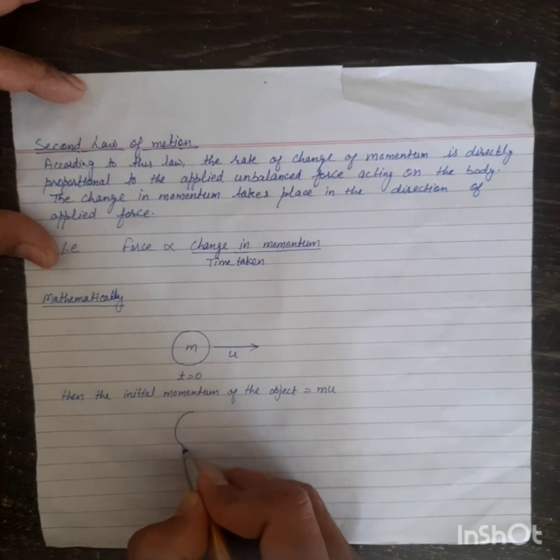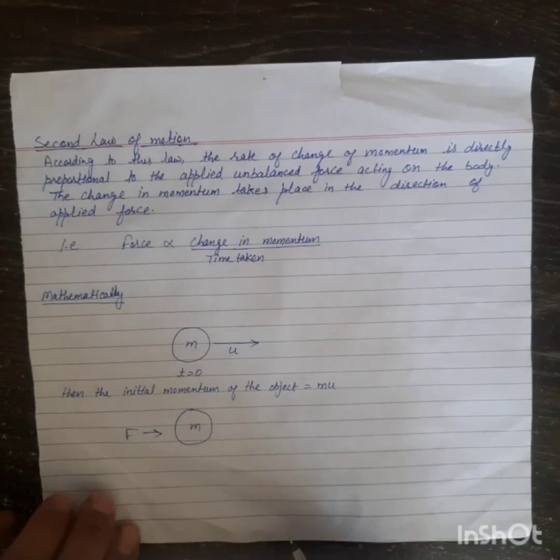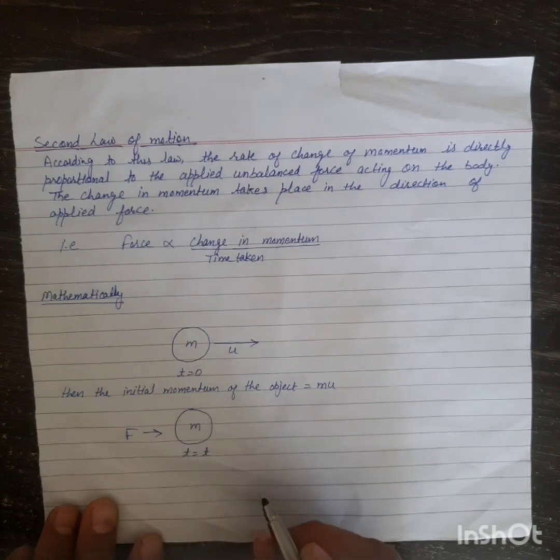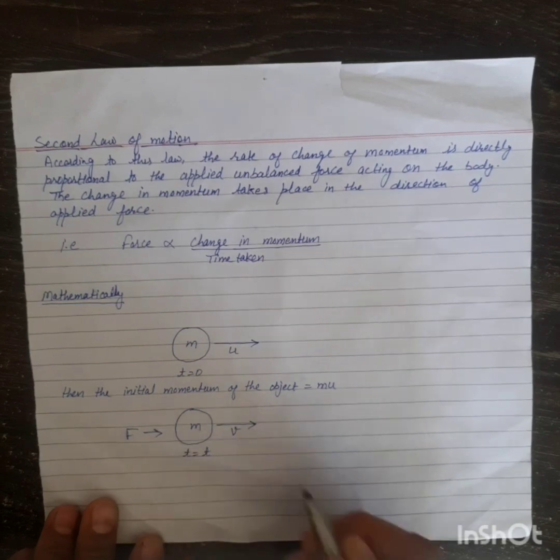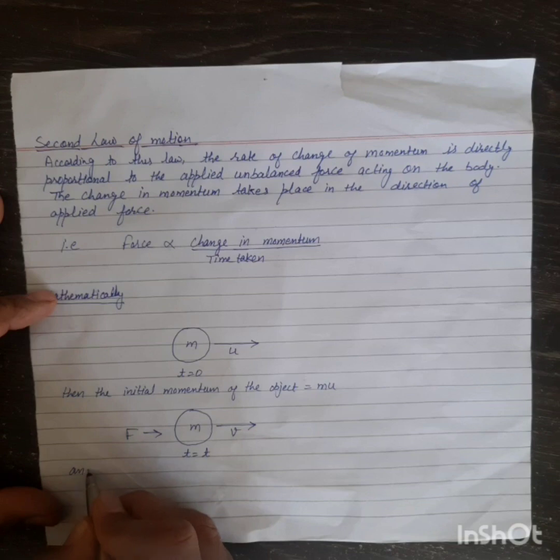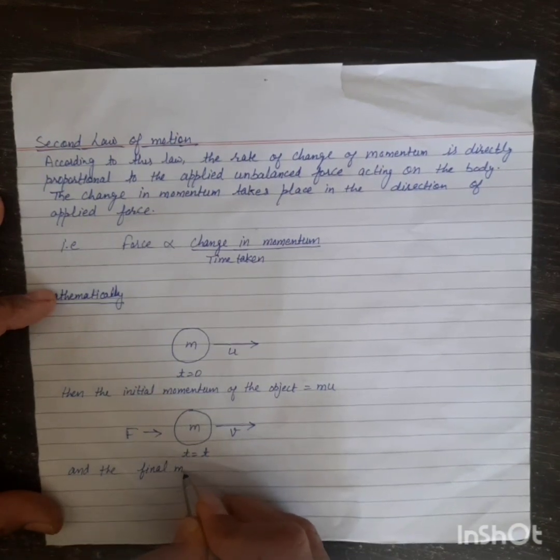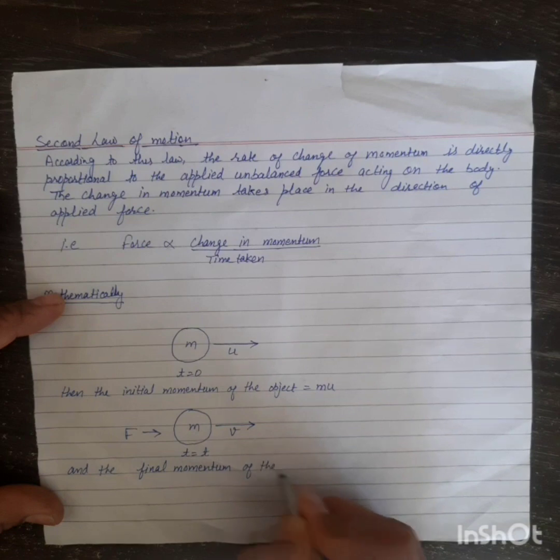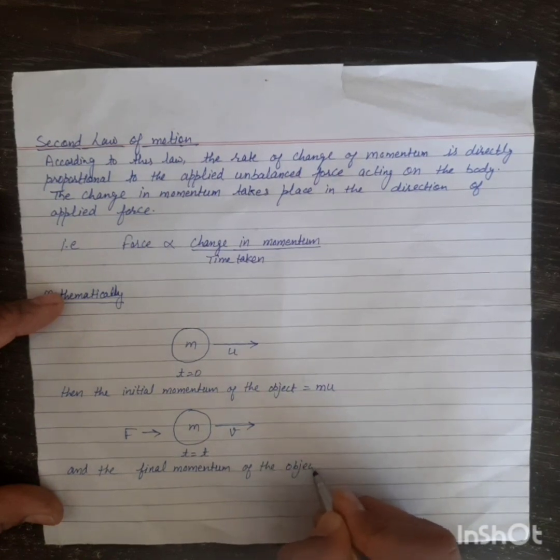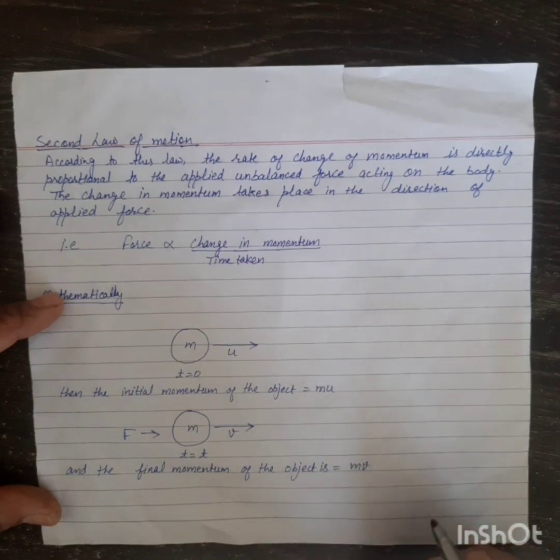When we apply force F on this object for a time t equals t seconds, its velocity changes and becomes v. And the final momentum of the object is equal to mv.